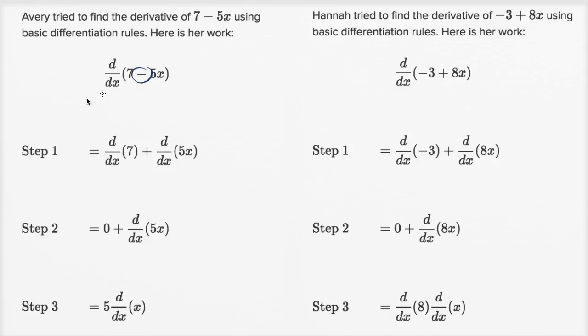It would have made sense for her to do the derivative of 7 and she could have said minus the derivative of 5x. That's one possibility she could have done. The derivative of a difference is equal to the difference of the derivatives - we've seen that property.